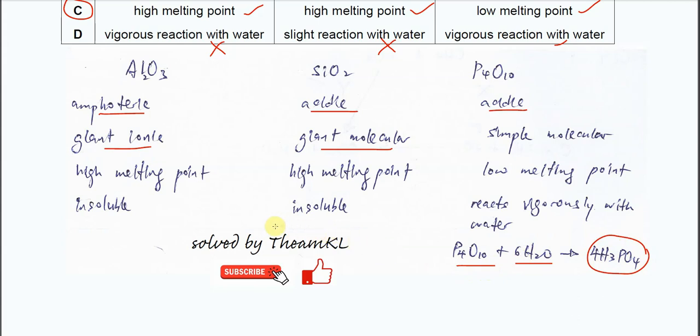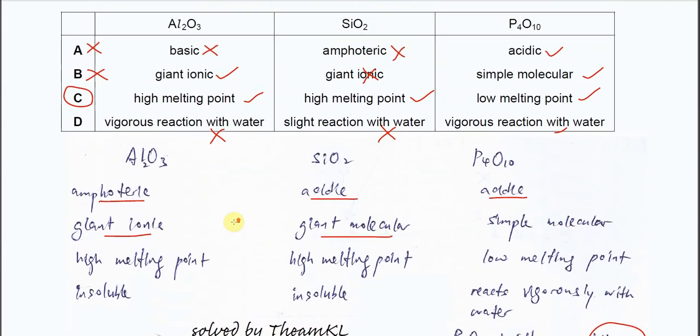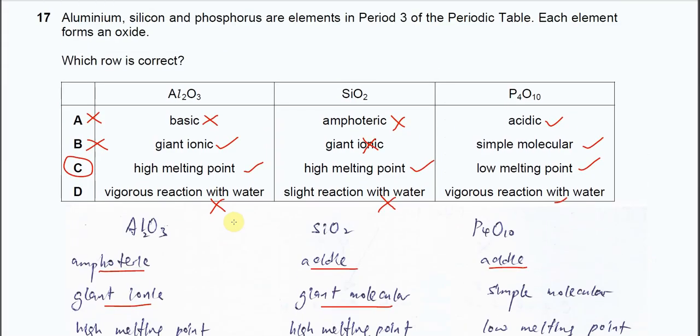So these are the comparisons between the three oxides. Answer confirmed is C. That's all. Thank you.